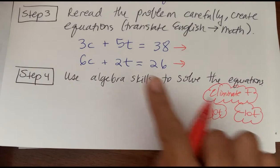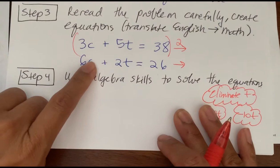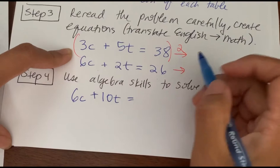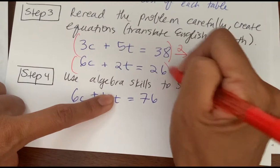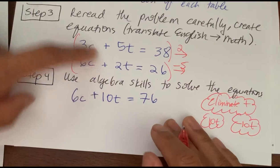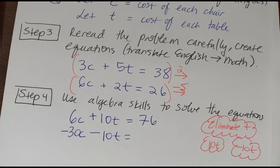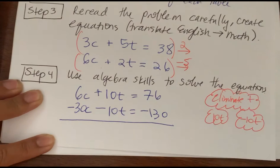Multiplying the first equation by 2 gives: 6c + 10t = 76. For the second equation, I need a negative 10t, so I multiply by negative 5, giving: −30c − 10t = −130. Now I add the two equations together. The t terms cancel out, leaving −24c = −54.